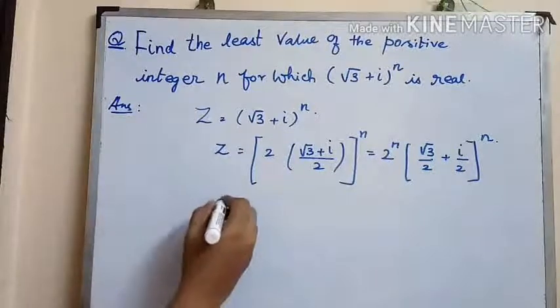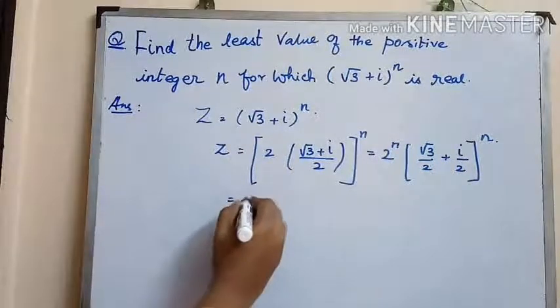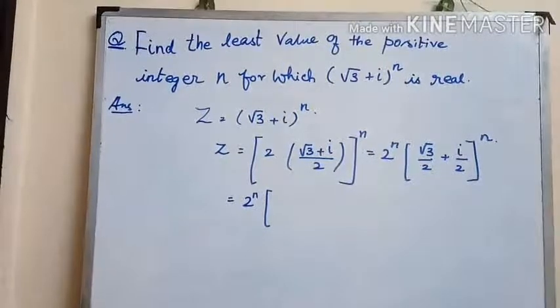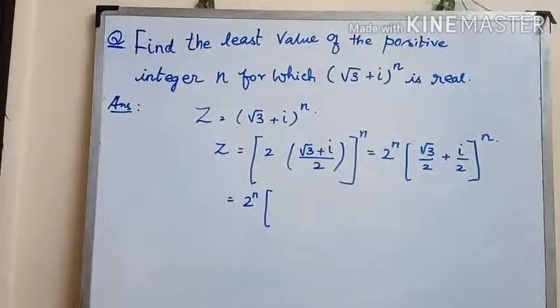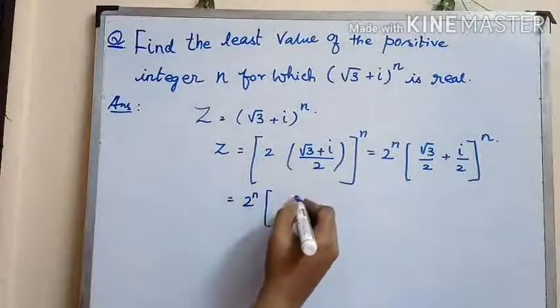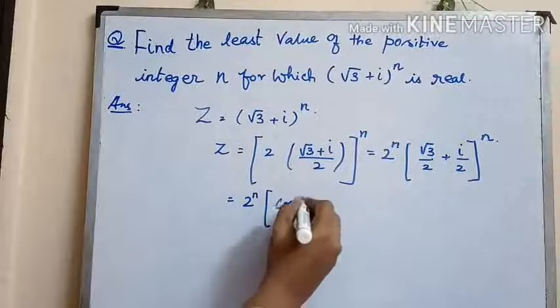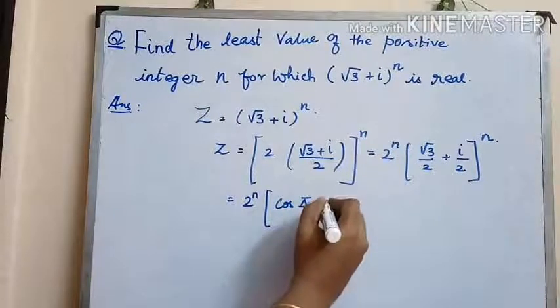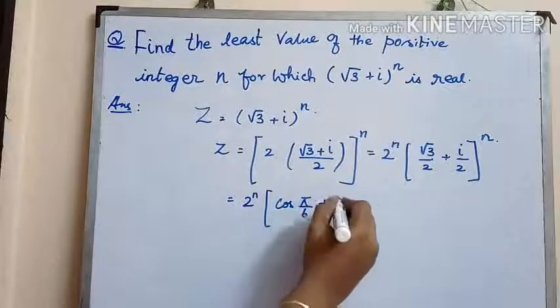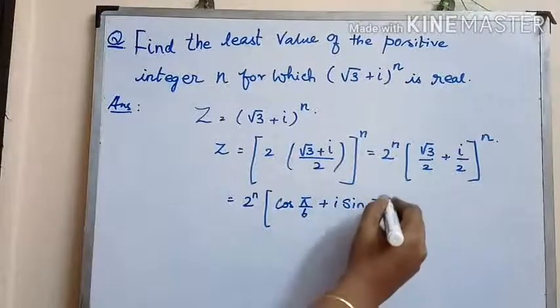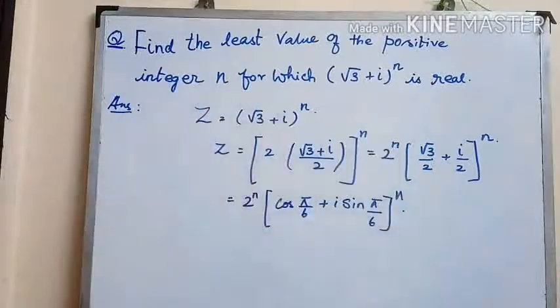We know that cos(π/6) is √3/2 and sin(π/6) is 1/2. So substituting the respective values, we'll have 2^n times [cos(π/6) in place of √3/2, plus i·sin(π/6) in place of 1/2] whole to the power of n.